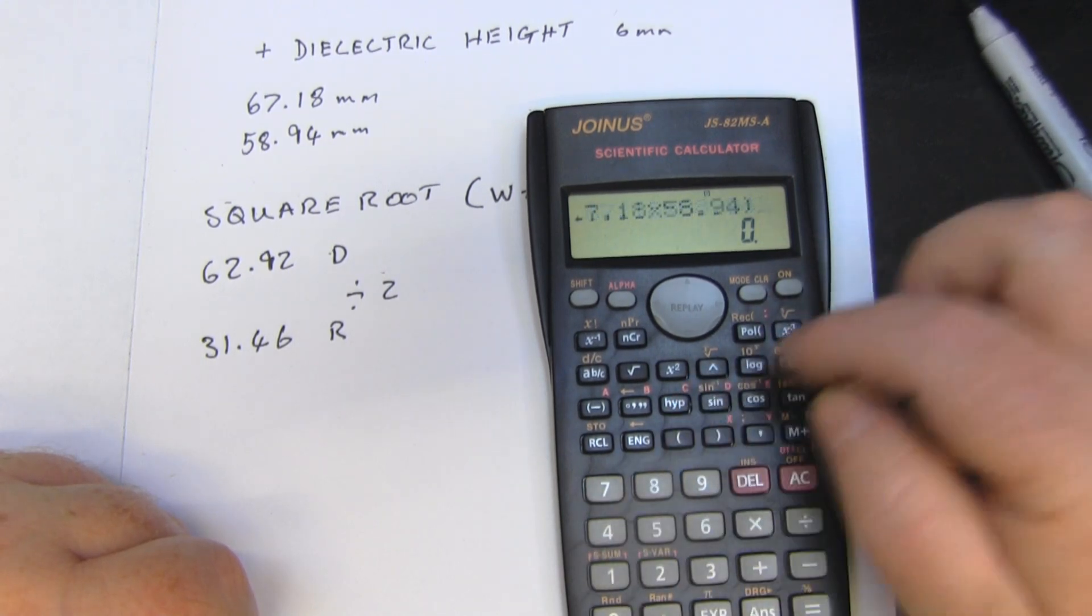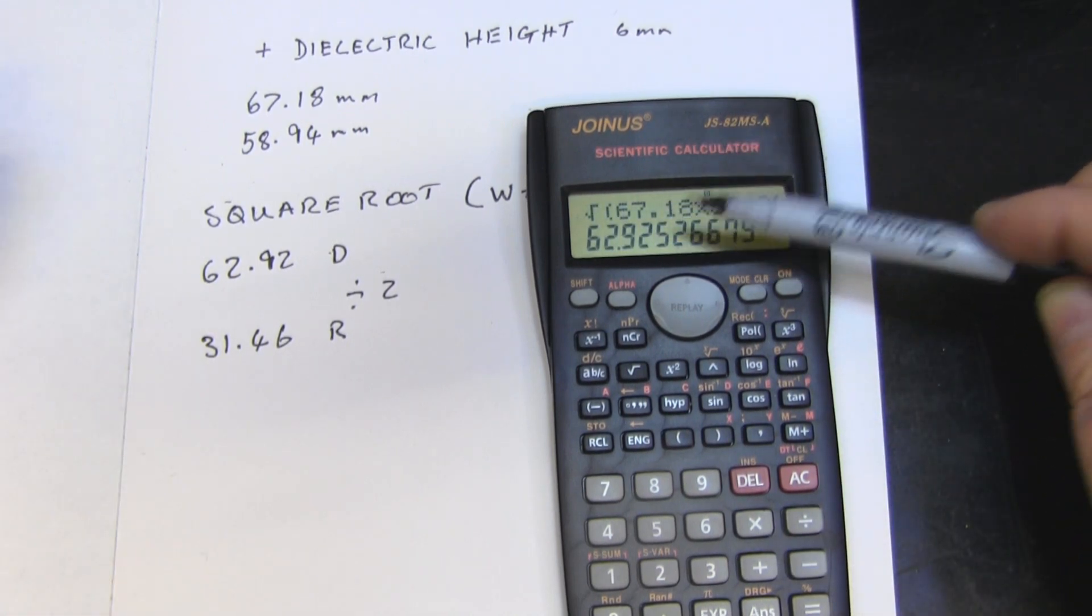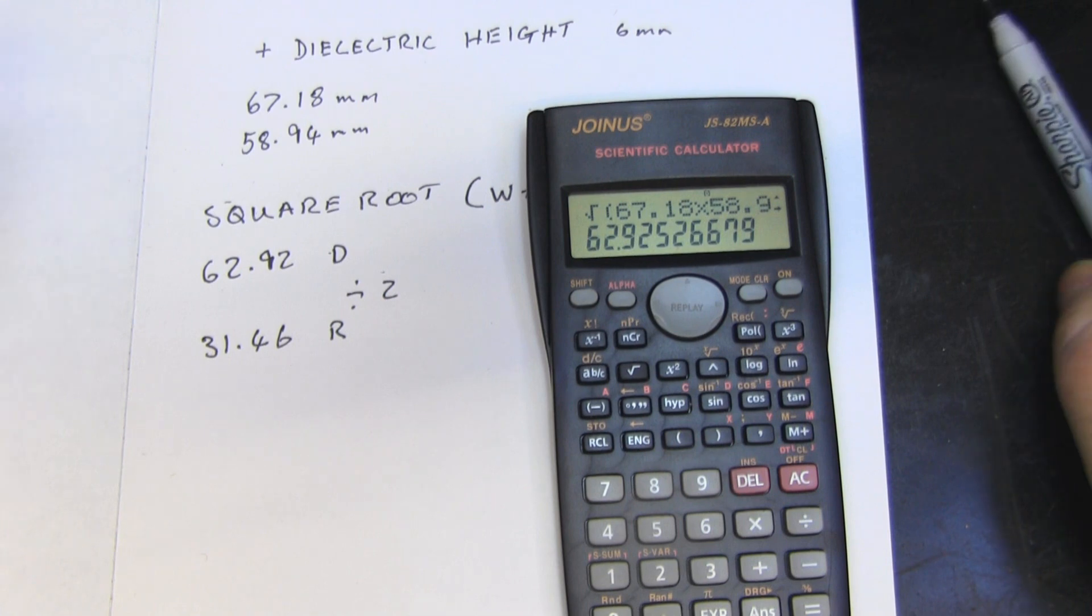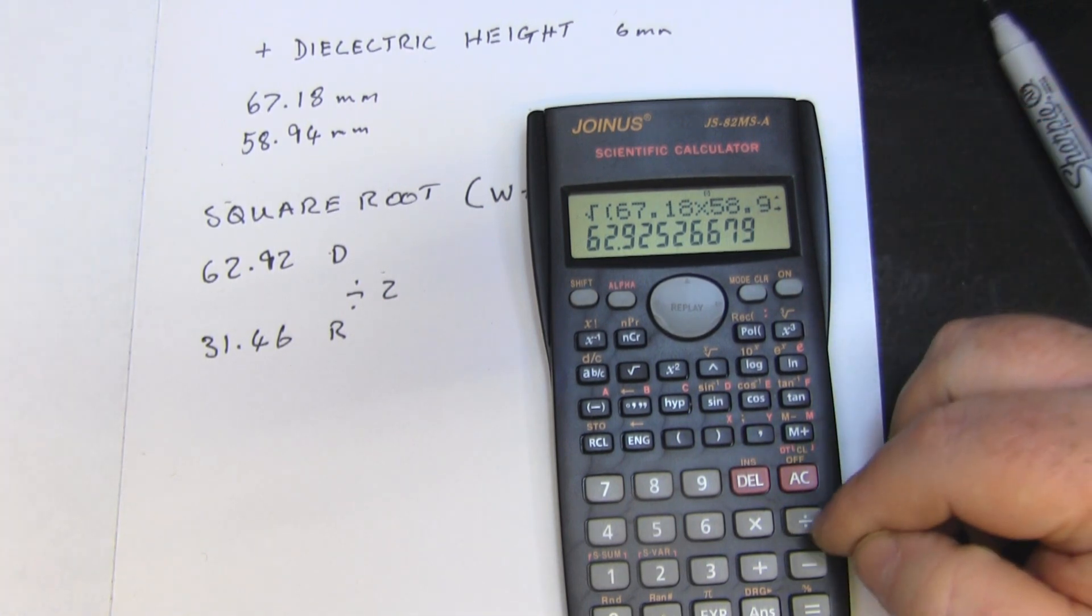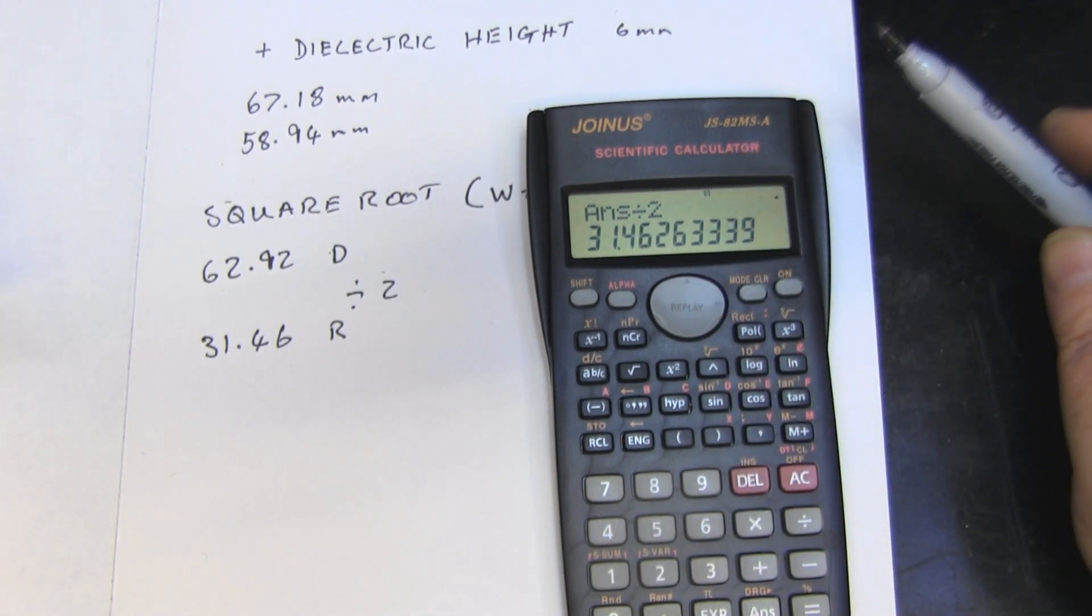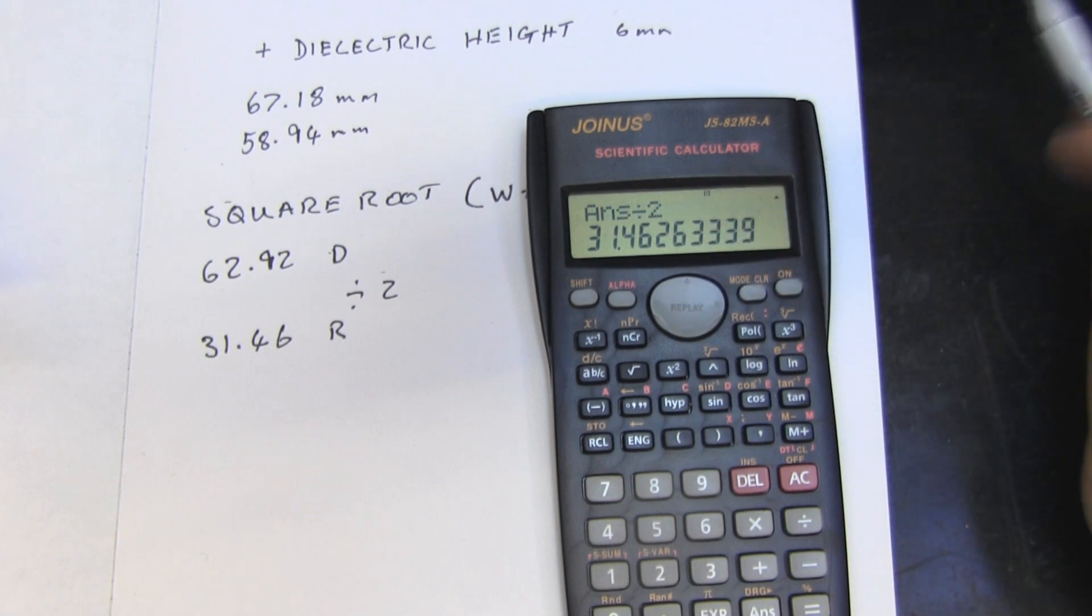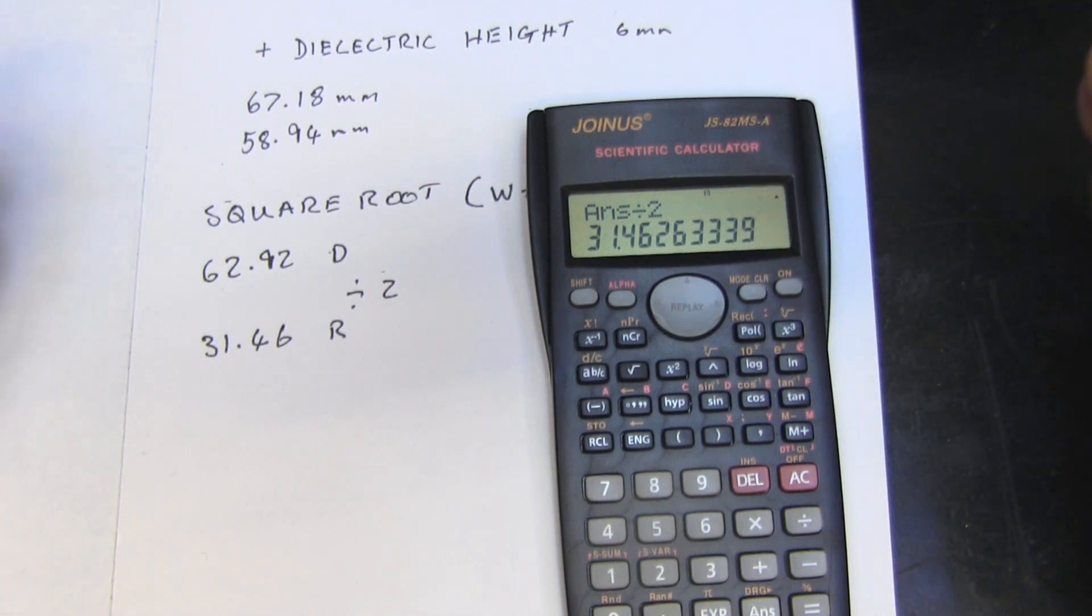And I'm going to close brackets, press equals, and that gives me 62.92 millimeters. Now of course that's the diameter. If you want the radius to use a compass, you just divide that by two and you've got your radius for your circular patch antenna: 31.46. This is for 2.45 gigahertz.